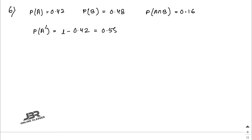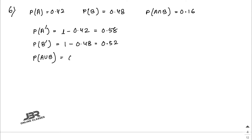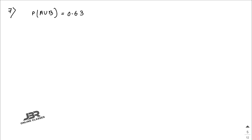Next, P(not B): B complement equals 1 minus 0.48, which equals 0.52. Now the last one, P(A or B): A or B means union, so P(A) + P(B) minus P(A ∩ B) equals 0.42 + 0.48 minus 0.16, and the answer is 0.74.